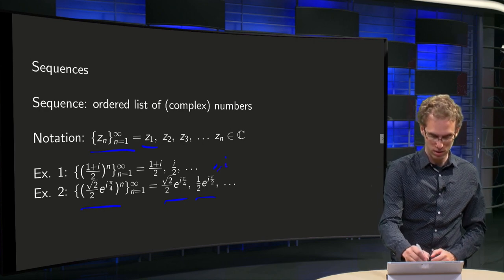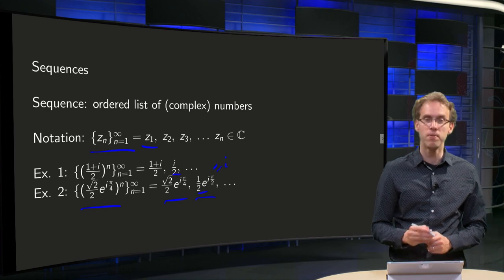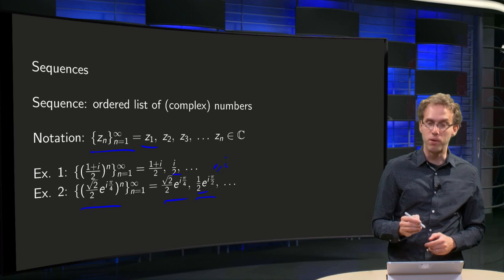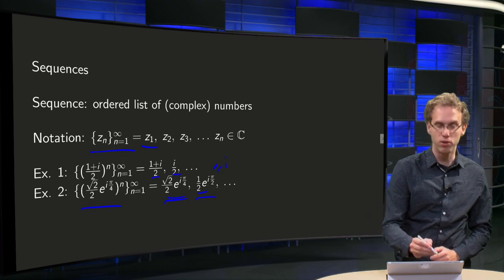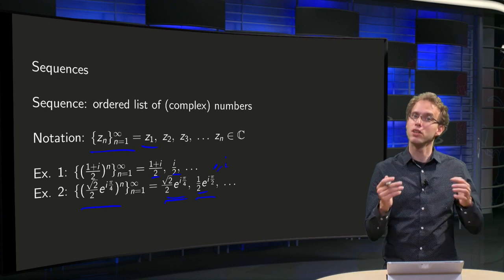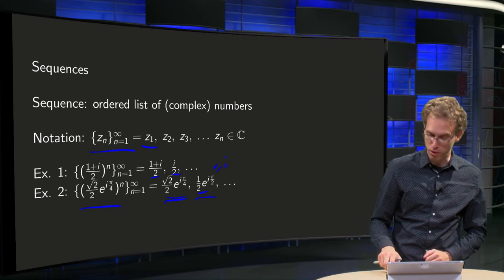So those are the same, this one and that one. And in fact if you work out with Euler's formula the first term, this one and this one are also the same. In fact the sequences of examples 1 and 2 are the same, the second one is just the first one written in polar form.